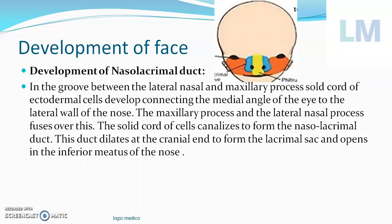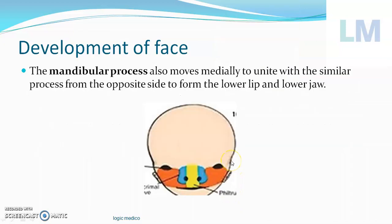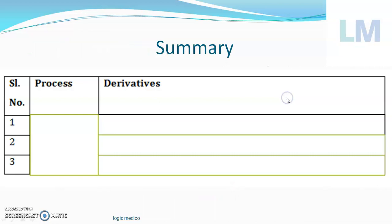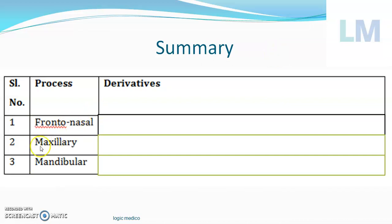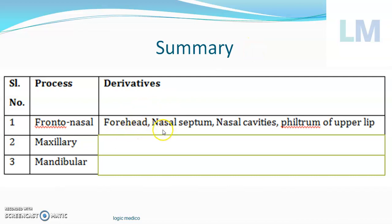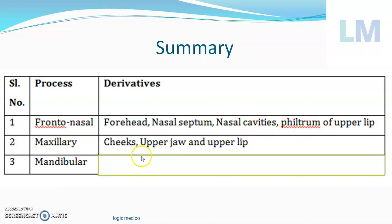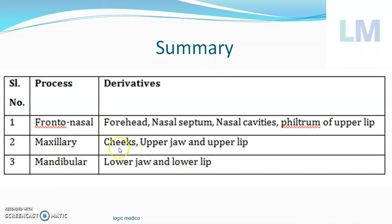Every minute, one ml of tear drains back into the nasopharynx. But if there is an emotional outbreak, it starts pouring down. If there is infection or rhinitis, it also pours out — that is common cold. The mandibular process is straightforward: the two mandibular processes unite with one another in the midline, contributing to the lower jaw and lower lip. In summary, the face is developed from five processes: a median frontonasal process, a pair of maxillary processes, and a pair of mandibular processes. The frontonasal process contributes to the forehead, entire nose, nasal septum, nasal cavity, and philtrum of the upper lip. The maxillary process contributes to the cheeks, upper jaw, upper lip, and lower eyelid. The mandibular process contributes to the lower jaw and lower lip.